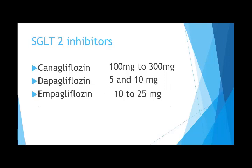SGLT-2 inhibitors are a recently marketed group. Three drugs are available: canagliflozin 100 to 300 mg, dapagliflozin 5 to 10 mg, and empagliflozin 10 to 25 mg. All three are given as a single daily dose. The starting dose for dapagliflozin is 5 mg, going up to 10 mg. Canagliflozin starts at 100 mg up to 300 mg. Empagliflozin starts at 10 mg and can be increased to 25 mg if response is inadequate.